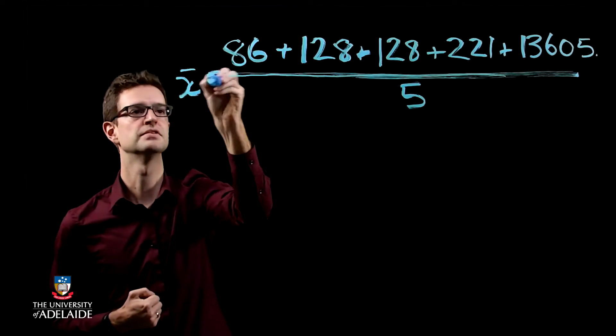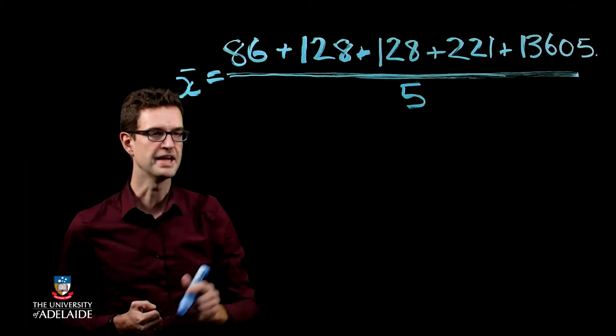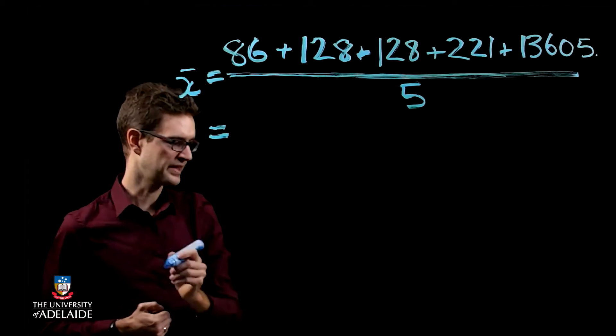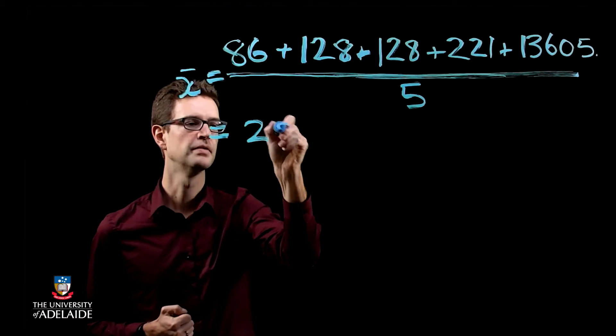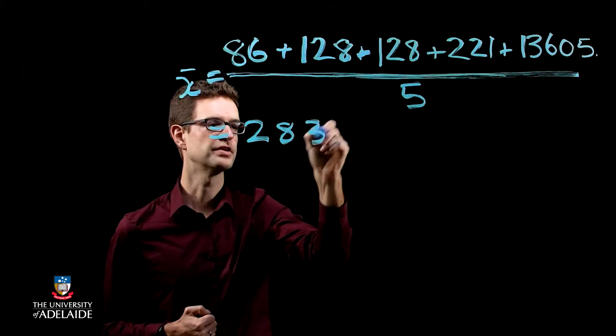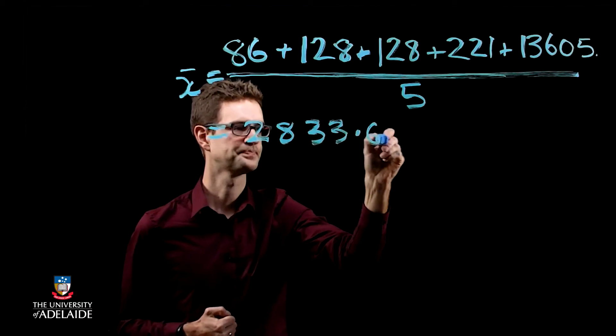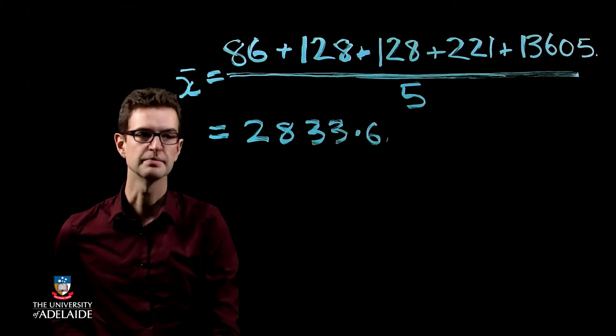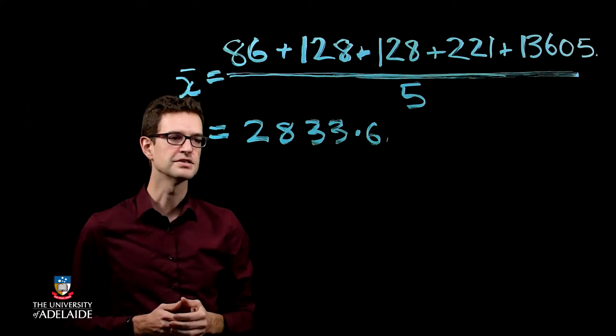Divide by the number of numbers, and that gives us the sample mean. So if I actually go and calculate this, you can try this at home, I'm going to get 2833.6. So that's my estimate of the average number of friends that somebody has.